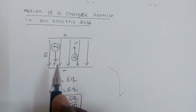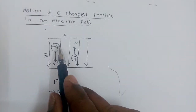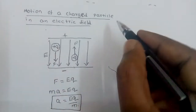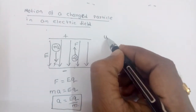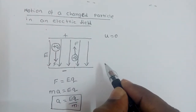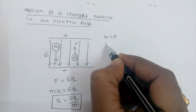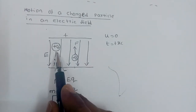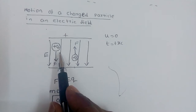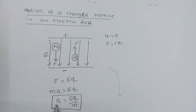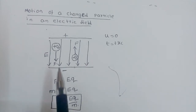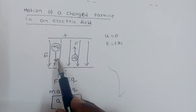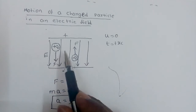Now, if this positively charged particle is initially at rest — initial velocity equal to zero — after t seconds, what is the velocity of the particle? The particle experiences a uniform force in the uniform electric field, and hence it gets uniform, constant acceleration. So we can use the equations of motion which we already studied in kinematics.